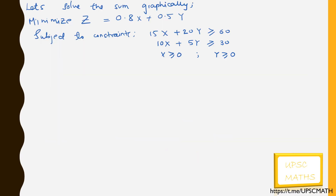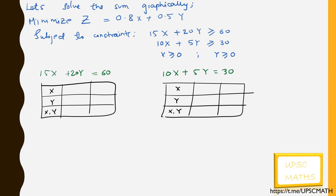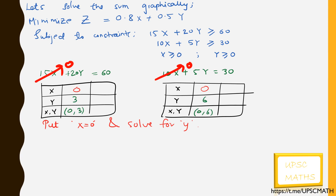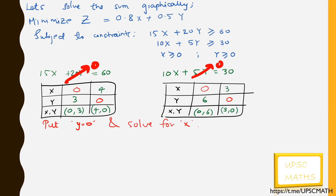Since this involves two variables, we can solve it using the graphical method. Let's find the coordinate points. Put x = 0 and find the value of y — we get (0, 3) and (0, 6). Now put y = 0 and find the value of x — we get (4, 0) and (3, 0).